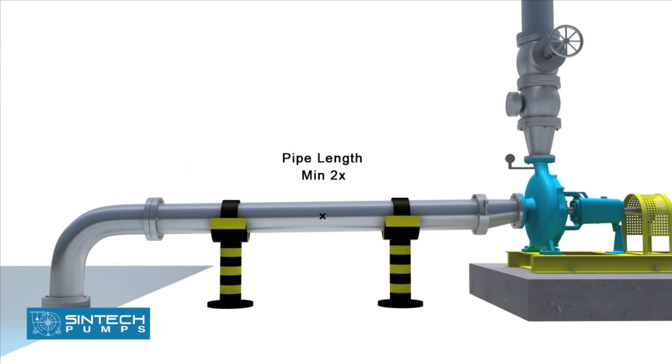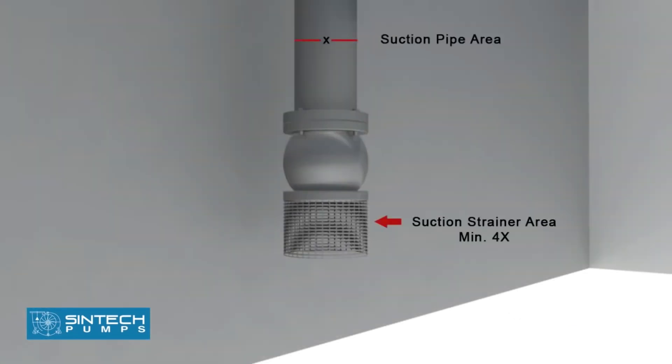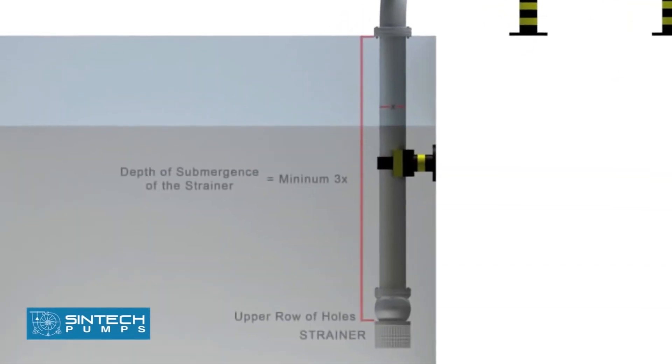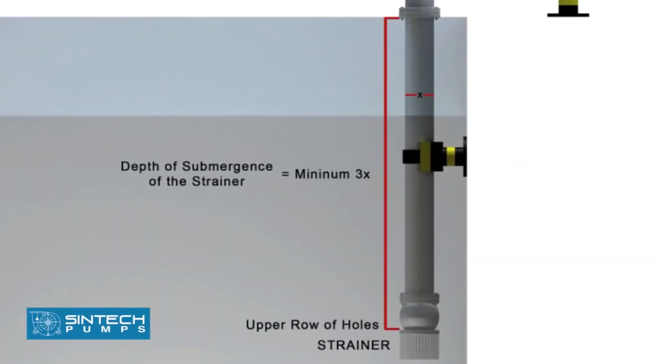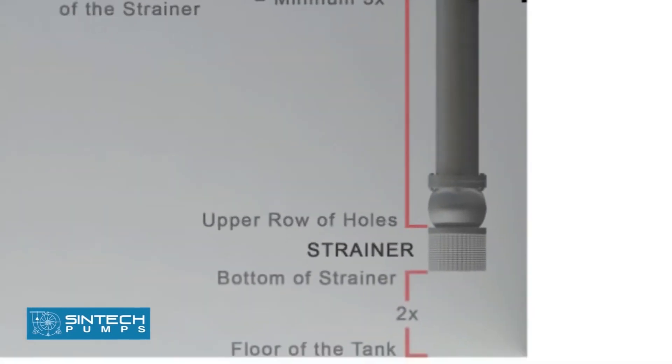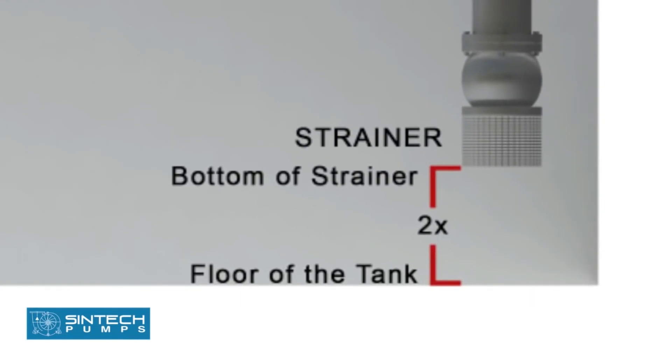The suction strainer must be at least four times the suction pipe area and the mesh size should screen out solid particles that could clog the impeller. The minimum depth of submergence of the strainer should be at least three times the pipe diameter measured from upper row of holes of strainer. The distance between the bottom of strainer and the floor of the tank should be considered as two times the pipe diameter.